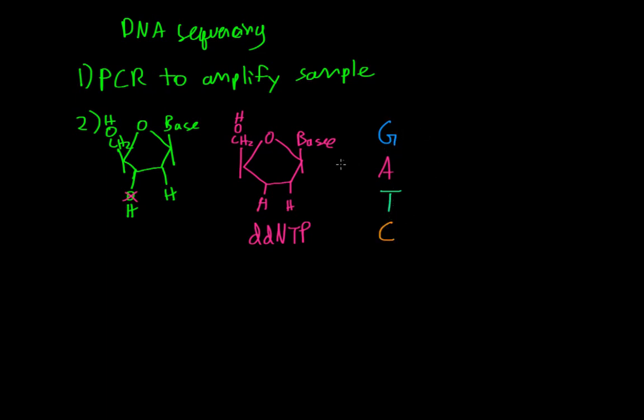And so basically what you have is you have these dideoxynucleotides with different fluorescent labels getting incorporated into the growing strand. And since PCR is able to amplify and create millions and millions of DNA fragments, you'll have strands of different lengths. So let's just look at an example.